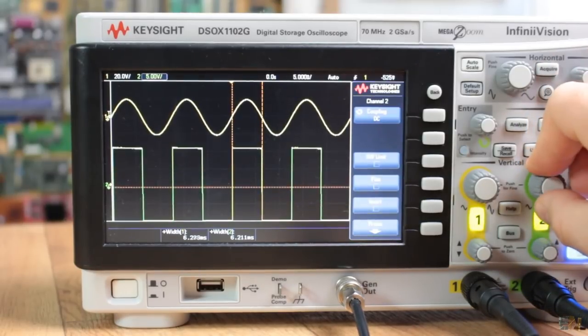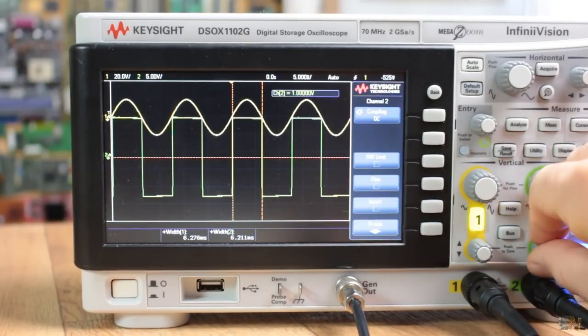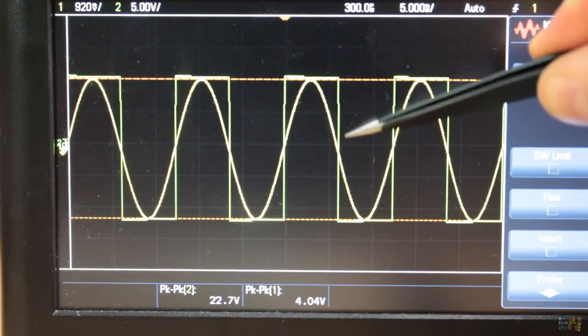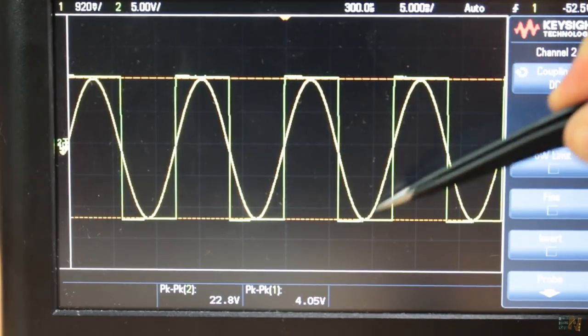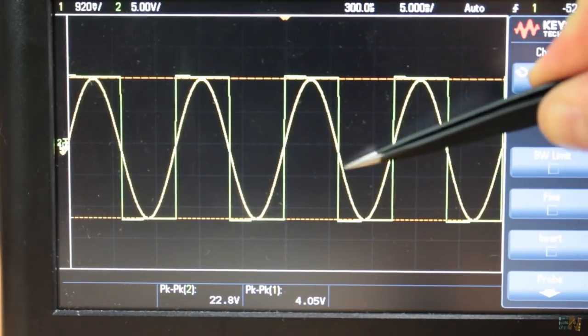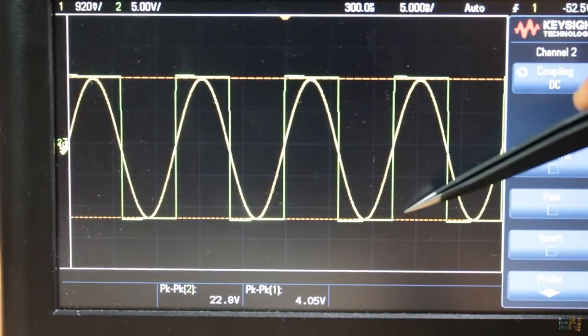The yellow line on my oscilloscope is the input, and the green is the output. As you can see, when the input value is above ground, the output is positive, and when the input is below ground, we have a negative output. That's how this configuration works.